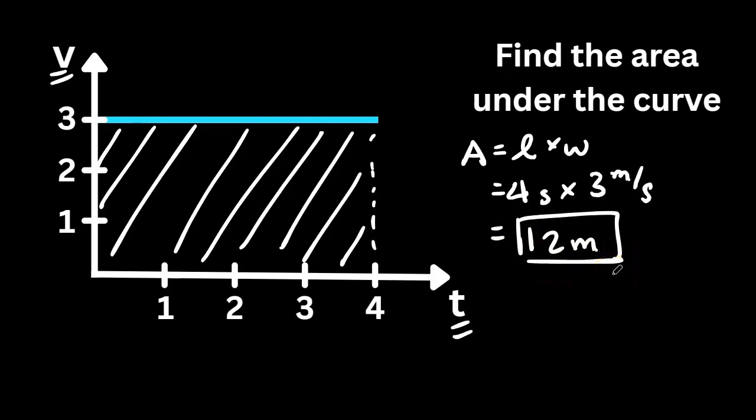What that tells us is that this object traveling at 3 meters per second for 4 seconds will travel 12 meters in 4 seconds.